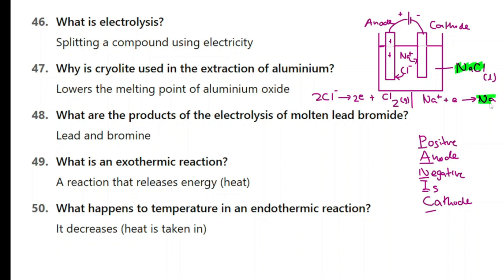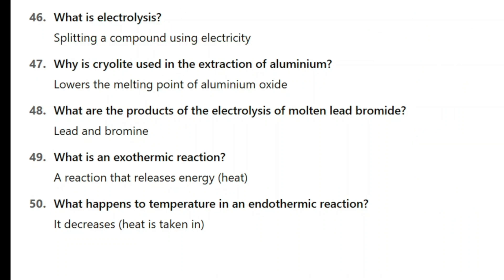Why is cryolite used in the extraction of aluminium? The normal ore of aluminium is bauxite. The melting point of bauxite is quite high, so we mix it with cryolite which lowers the melting point, therefore saving energy. What are the products of the electrolysis of molten lead bromide? Molten means liquid lead bromide (PbBr₂ liquid). You get lead and bromine — similar to the sodium chloride example. So lead and bromine.